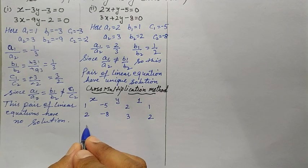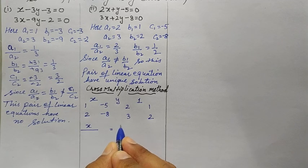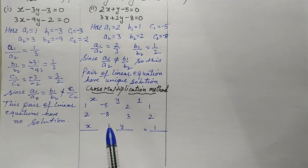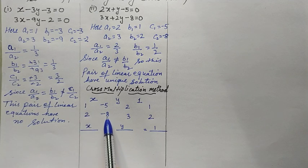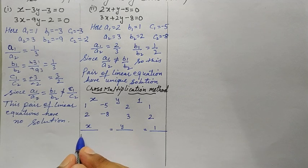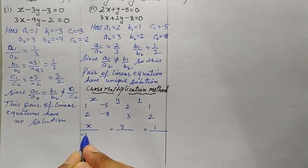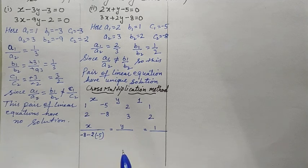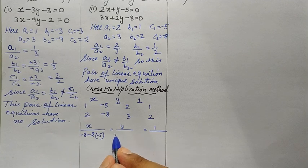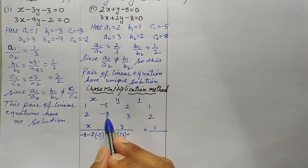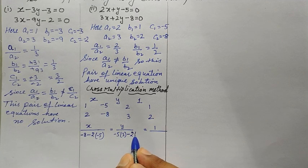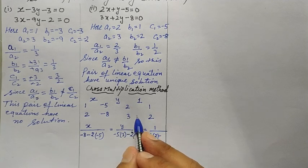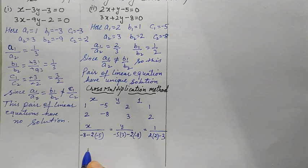Now we cross multiply: x over (1×(−8) − 2×(−5)) = y over ((−5)×3 − (−8)×2) = 1 over (2×2 − 3×1). So x is over −8 minus (−10), y is over −15 minus (−16), and 1 is over 4 − 3.